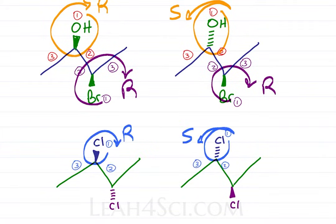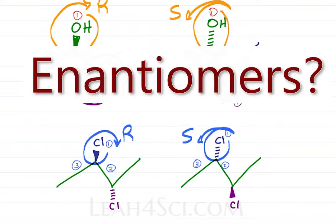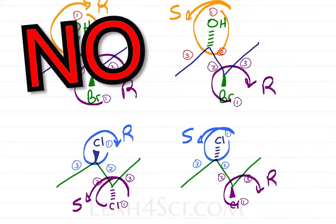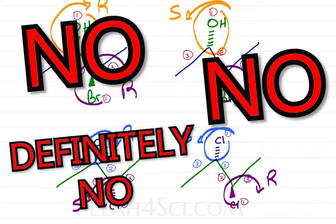And what about this molecule? The blue chlorines are R and S. Enantiomers? The purple chlorines are S and R. Also enantiomers? Actually, no, no, and definitely no.